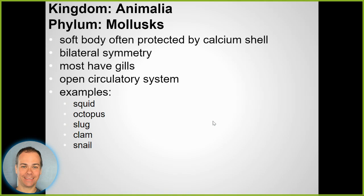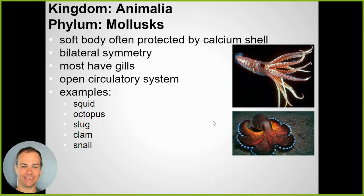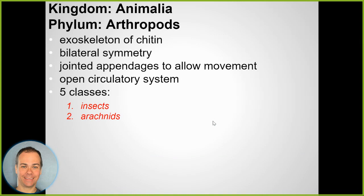Mollusks are probably familiar because many people eat them. They have a soft body and often a shell around the outside, and they have gills. Examples include squid, octopus, slugs, clams, mussels, and snails. Many are filter feeders - the ones that live in water, like clams, suck in water, filter out bits of food, and digest it.